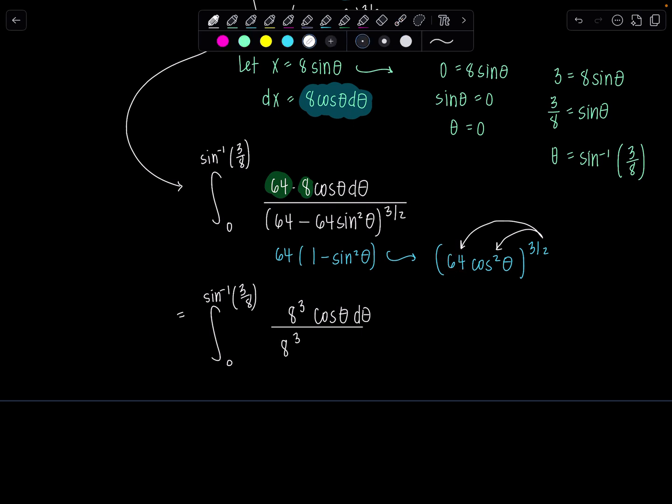Oh, how lovely. And then cosine squared raised to the 3 halves. You multiply these exponents by each other. 2 times 3 halves, that just is going to give us 3. So we have cosine cubed theta down there. Perfect. So now we can have a little cancel party. 8 to the 3rd cancels out. This cosine cancels out, and now I just have cosine squared in the denominator, which is perfect.